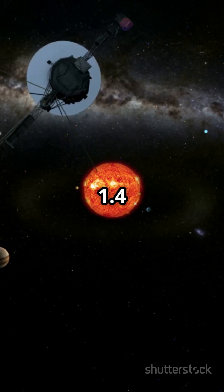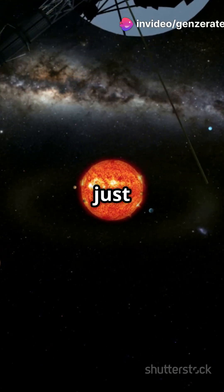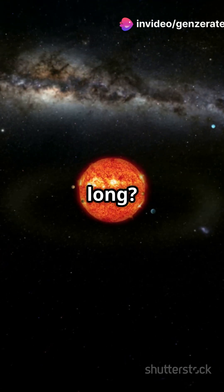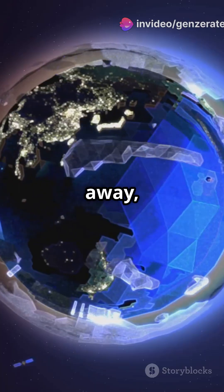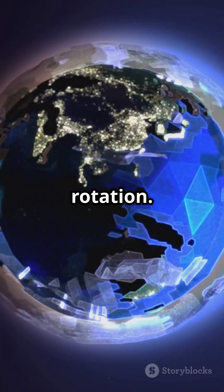Did you know that 1.4 billion years ago, a day on Earth was just 18 hours 41 minutes long? The moon is drifting away, slowing our planet's rotation.